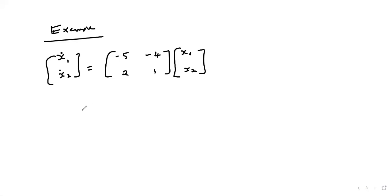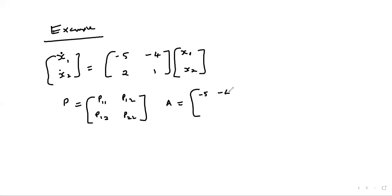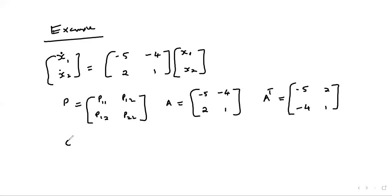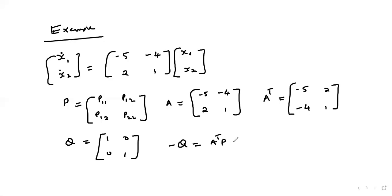This is a second-order system, so we define a real symmetric matrix P as P = [p₁₁, p₁₂; p₁₂, p₂₂]. The matrix A is [−5, −4; 2, 1], and A transposed is also [−5, 2; −4, 1]. We choose Q to be a 2×2 identity matrix [1, 0; 0, 1].